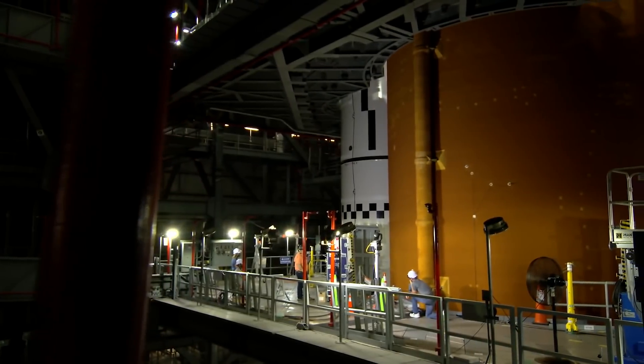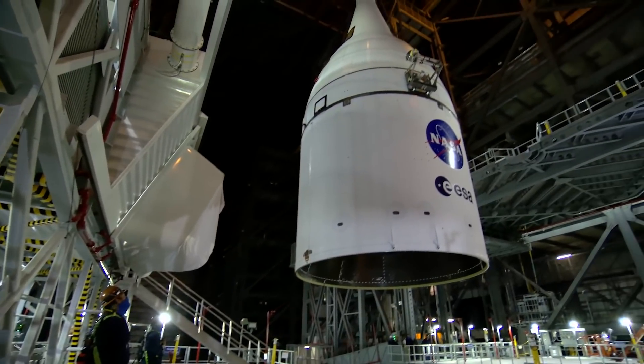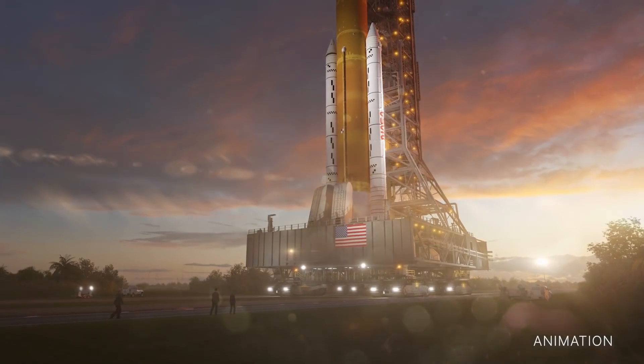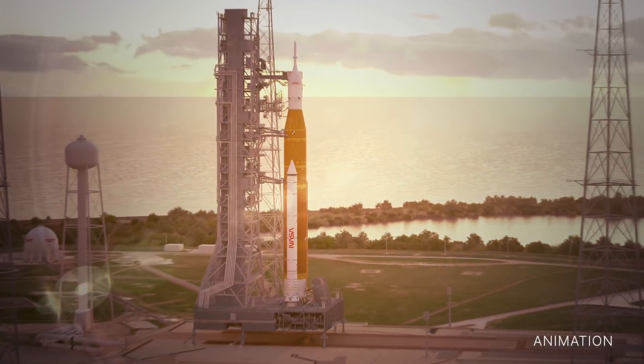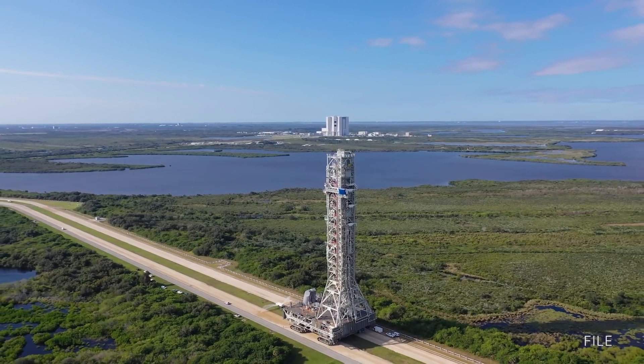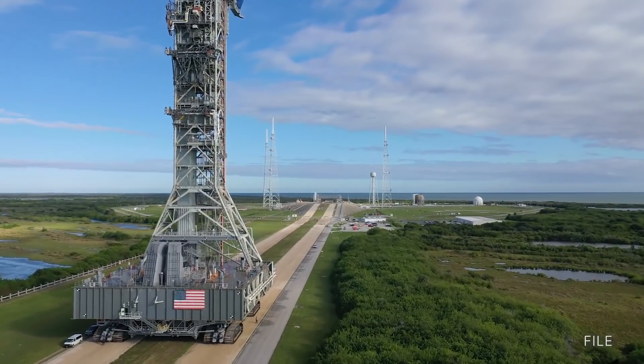The platforms, which enable crews to work on the Space Launch System rocket and Orion spacecraft, have been moved in anticipation of rolling out the integrated spacecraft to the launch pad ahead of the uncrewed Artemis I mission around the moon. The four-mile trek to the launch pad is currently targeted to begin on March 17th.